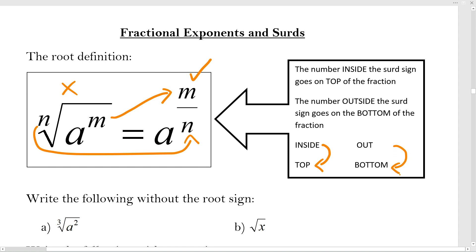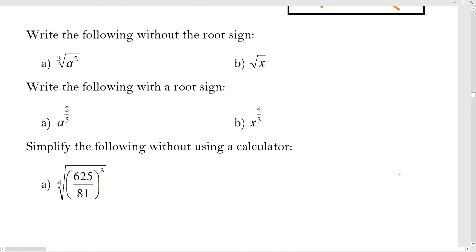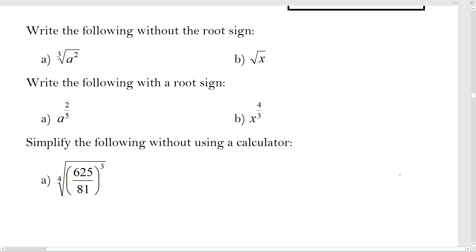Write the following without the root sign. That's just going to be a to the m/n - inside goes to the top and the outside goes to the bottom. For b, we don't have a number here but it's actually a two. Remember, if there's no root number then it is a square root because that is the most common one. So that is x to the 1/2.